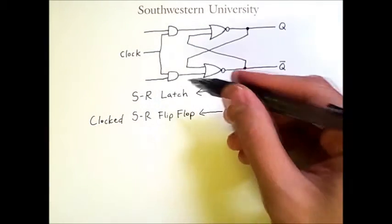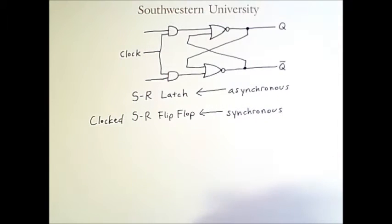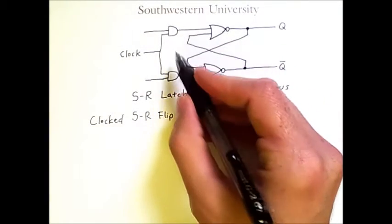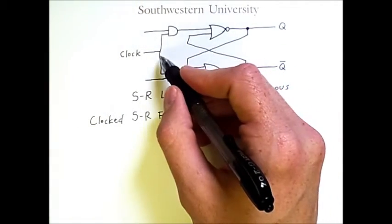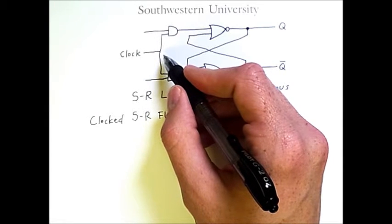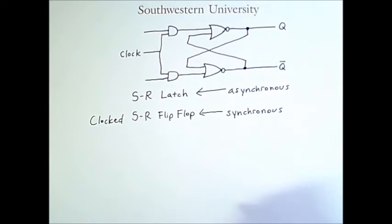So we still have our set and reset signals coming in, but now neither of those signals can get past these AND gates except for when the clock sends its signal of 1. Otherwise, the circuit behaves the same as before.